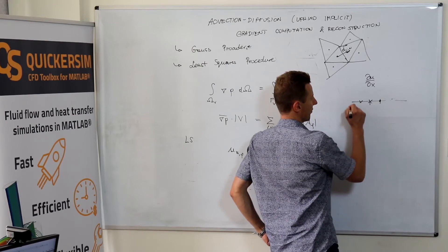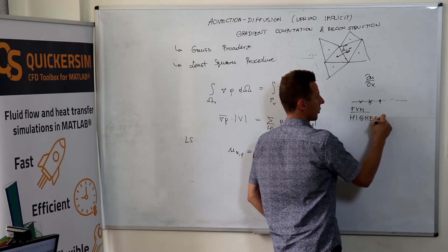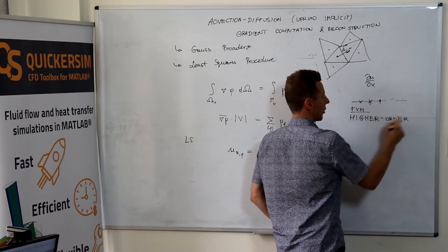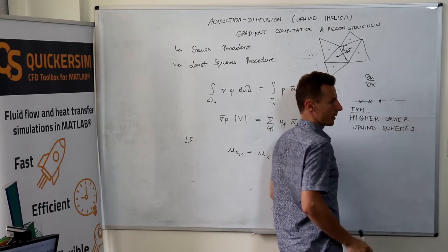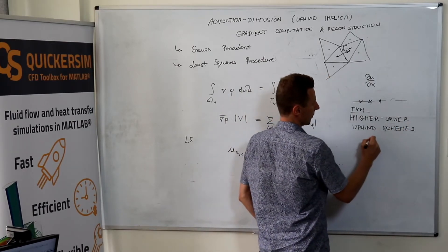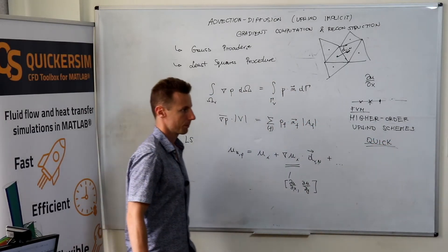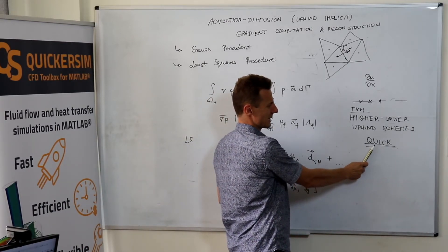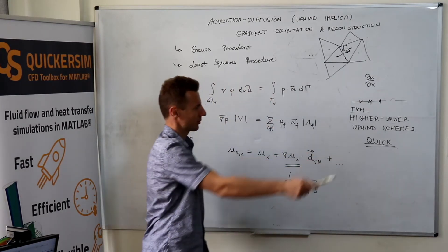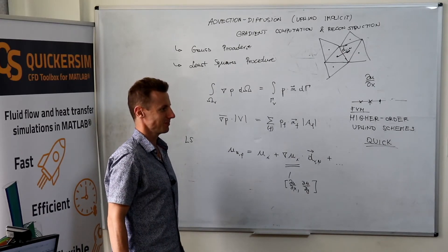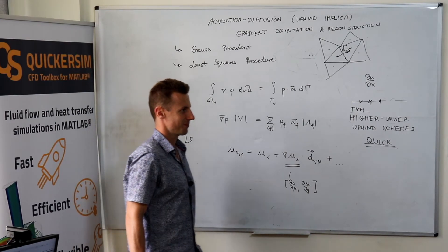But for the finite volume method, if you're interested, just look in the literature for higher order upwind schemes. You've got the book. One of them also exploited in Ansys Fluent is the QUICK scheme. Quadratic interpolation convective. If you want, just check. I don't know.